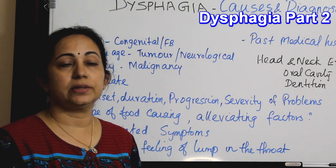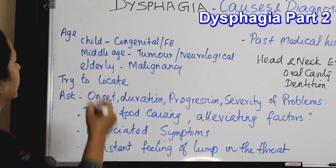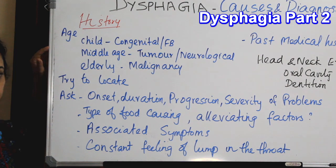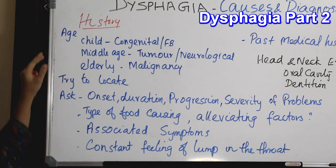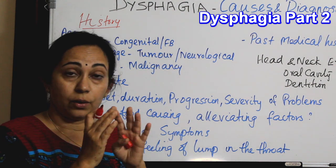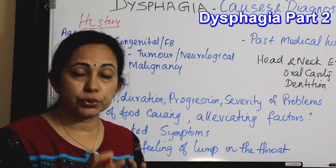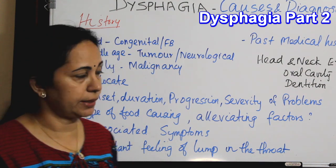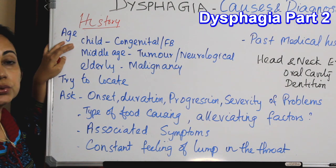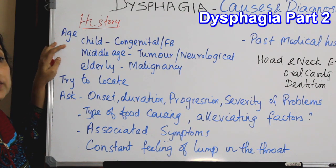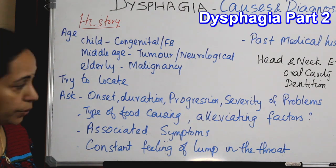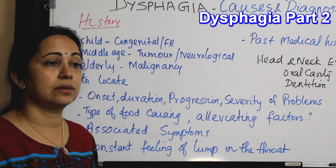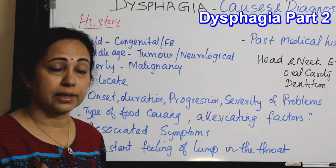Investigations of dysphagia start with a very thorough history taking. Even from the age of the patient will lead to diagnosis. You should keep in mind all the causes of dysphagia and ask in relation to that. If it is a child, there is more chance of congenital disorders or accidental ingestion of a foreign body. In middle-aged patients, there are reasons like globus pharyngeus or gastroesophageal reflux.